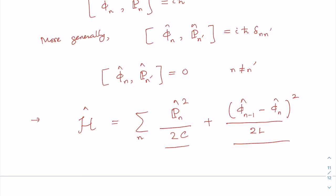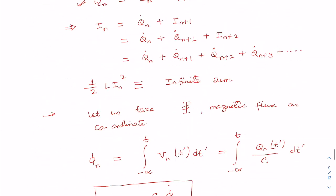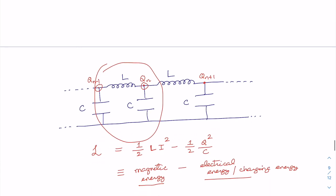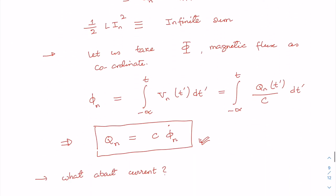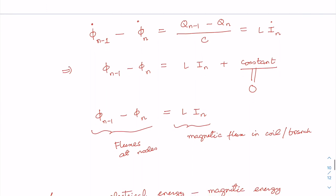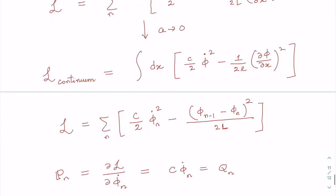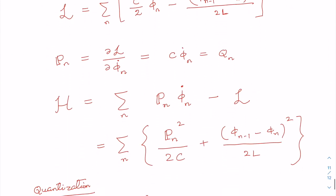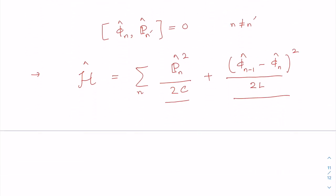You should also note that this Hamiltonian is translationally invariant because the transmission line itself is translationally invariant — each cell is equivalent to one another. We are going to exploit this translational invariance to write the Hamiltonian in terms of normal coordinates by choosing appropriate normal modes, and we will discuss this in the next class.